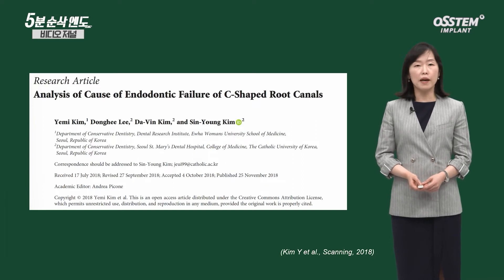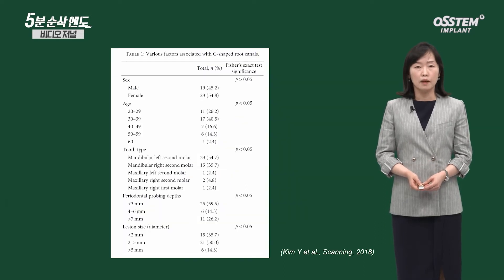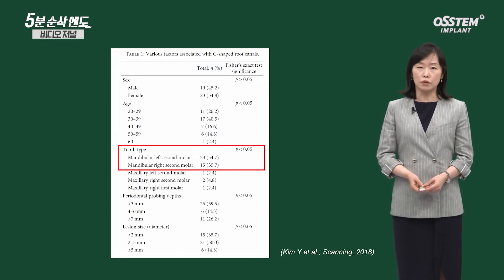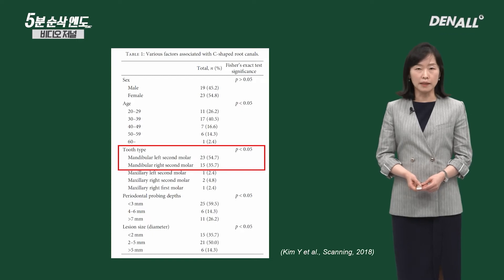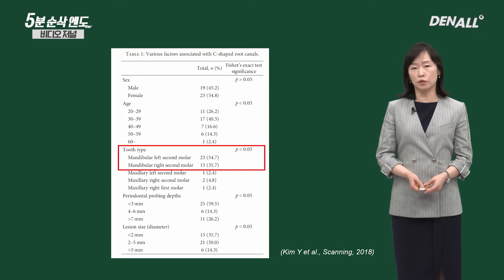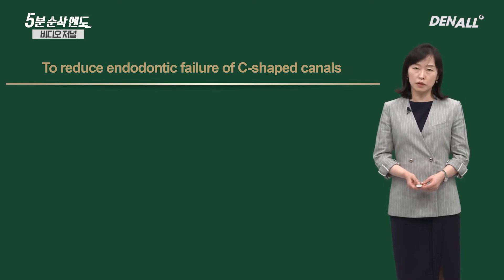This was not a CBCT image analysis. I analyzed the cause of failure. The number of subjects was few — approximately 42% — however, most of them were lower second molars. The C-shaped root canal failed, and surgery was performed.